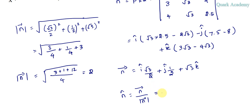Now we can write this as 1 by 2, and here root 3 by 2 i cap plus 1 by 2 j cap.